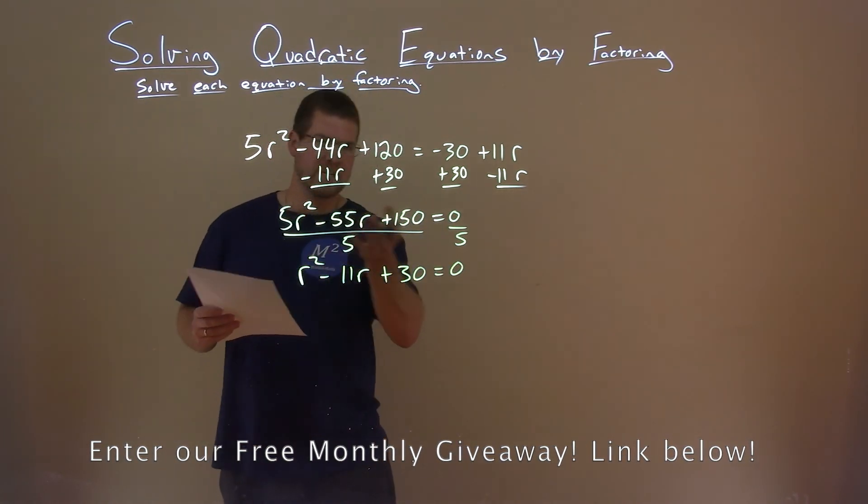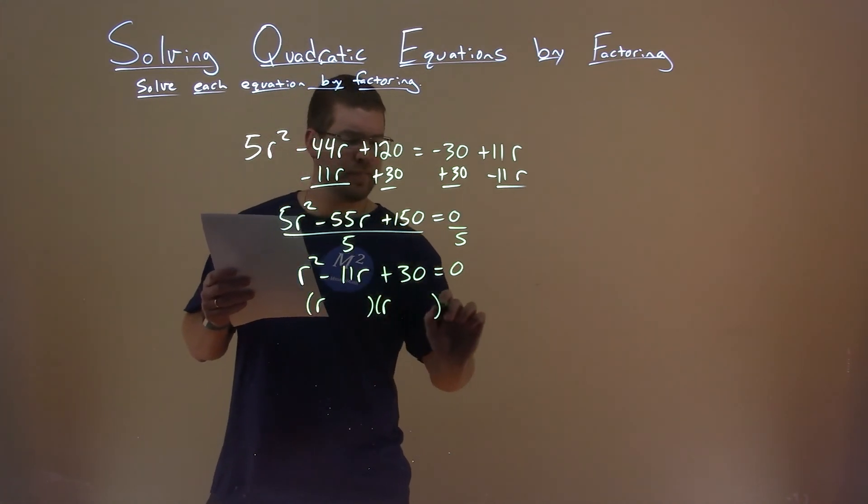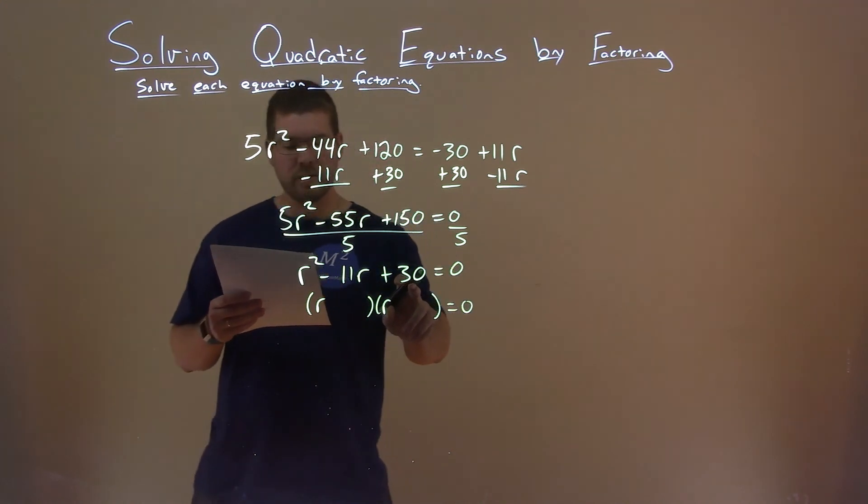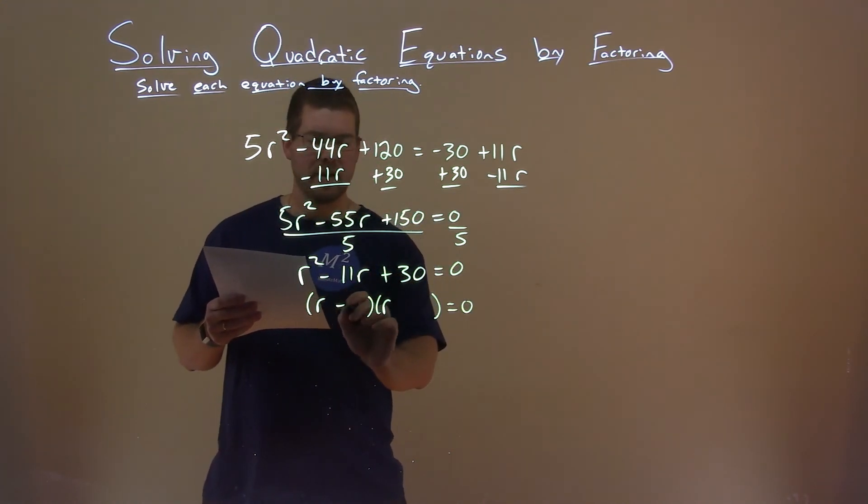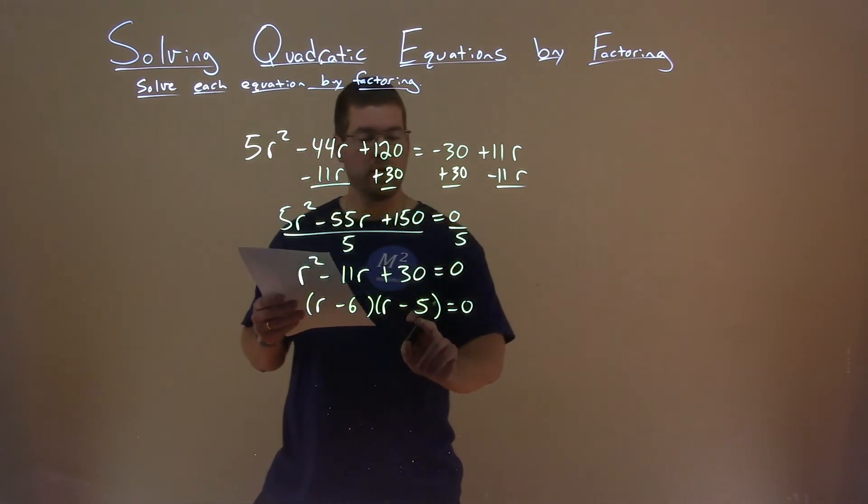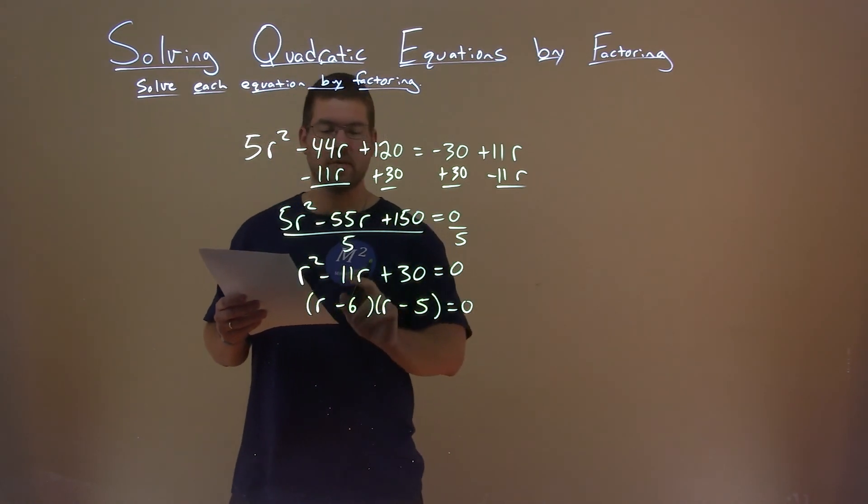Now this is actually fairly easy to factor. We have r here and r here, and we have to ask ourselves: what two numbers multiply to be positive 30 but add to be negative 11? And I'm thinking negative 6 and negative 5. Negative 6 times negative 5 is positive 30. Negative 6 plus negative 5 is negative 11.